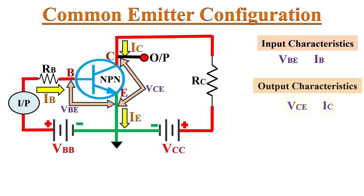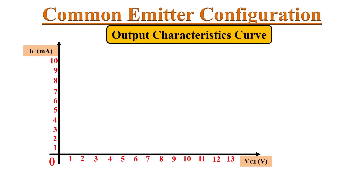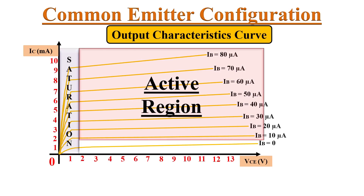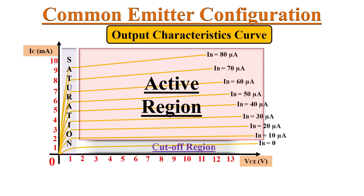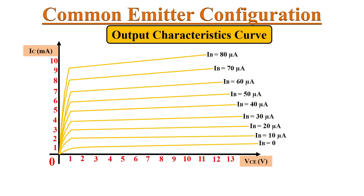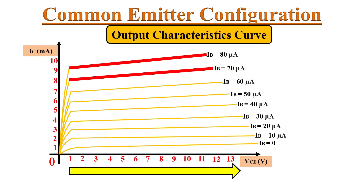Now let's discuss the output characteristics — VCE and IC. The output characteristic curve shows the relationship between the collector current IC and the voltage VCE. Here are the different IC versus VCE curves for different values of base current IB. We can divide these curves into three regions: the active region, the saturation region, and the cutoff region. In the active region, as base current IB increases, collector current IC also increases. Also, as VCE increases, IC also increases slightly, meaning the collector curves are not perfectly horizontal.